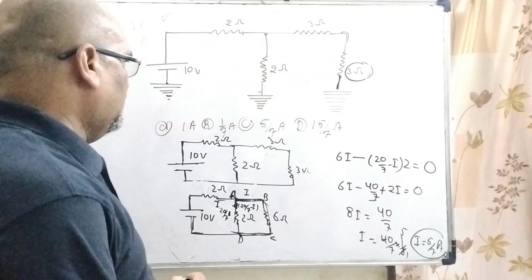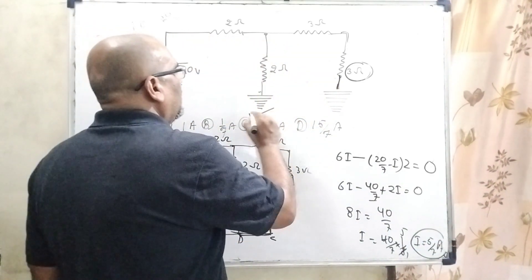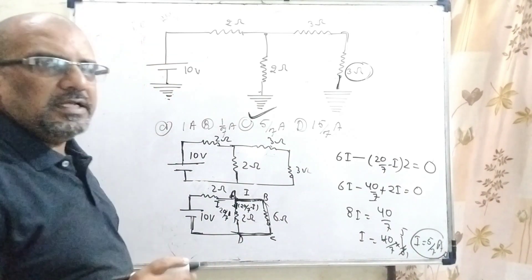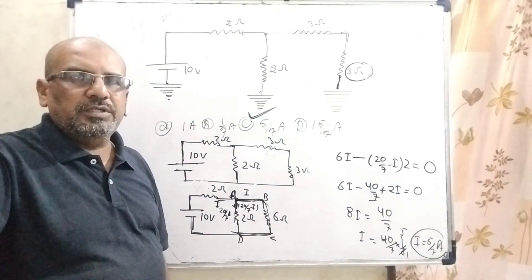So looking at option C, option C is the correct answer — 5 by 7 ampere. I hope you understood this question. Thank you for staying till the end of this video. Although your success is 100% your hard work, if my videos can help you, then I will consider myself lucky. Please like, share and subscribe my channel so that it can reach more and more students. Take care. Bye bye. Thank you.